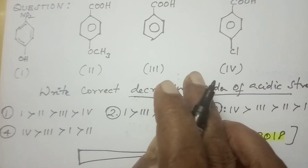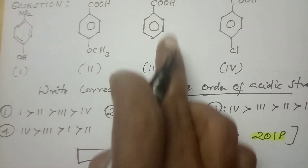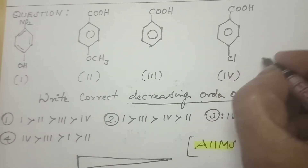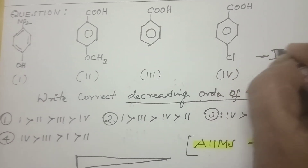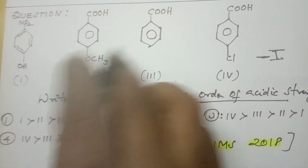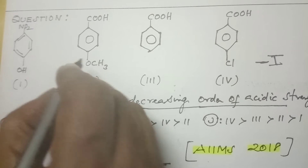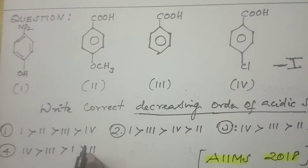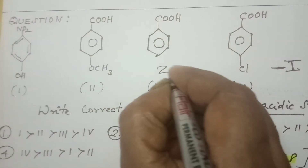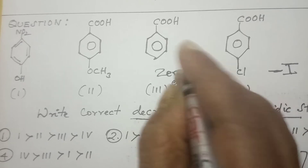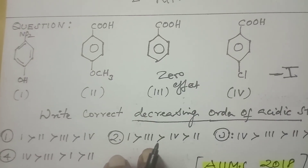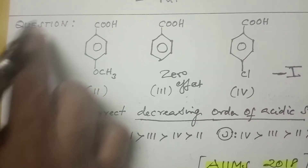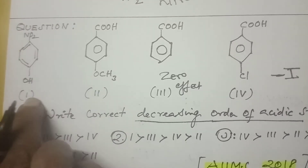Let us see acid strength with the minus-I effect and plus-I effect. It is simply benzoic acid. Benzoic acid with Cl — Cl is the minus-I effect. Here the methoxy group has an electron-releasing effect. Here there is no effect at all — zero effect on benzoic acid. Now, this acid — the fourth one is para-nitrophenol.